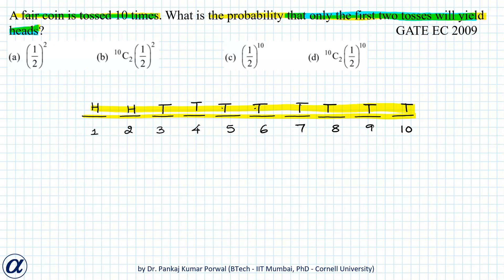Because the individual tosses of a coin are independent events, the probability of intersection will equal the product of probabilities.